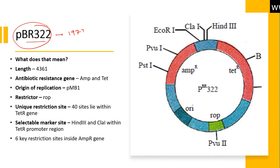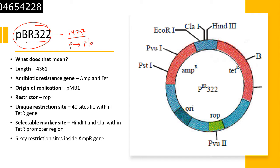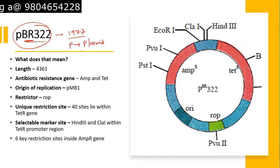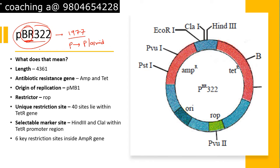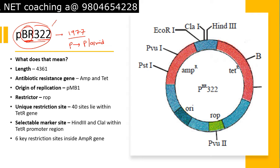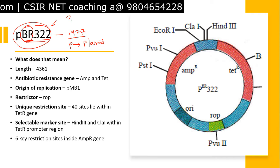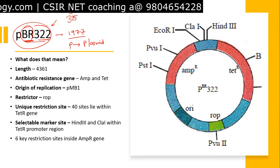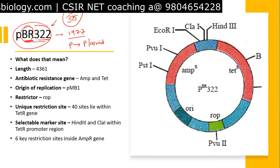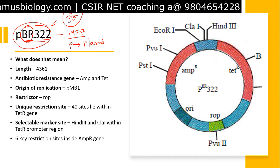PBR322 was created in 1977 in the laboratory of Herbert Boyer at the University of California, San Francisco. In the name: P stands for plasmid, BR stands for Bolivar and Rodriguez — the names of the researchers working with this particular plasmid — and 322 is the number of the plasmid they worked with. That lab was working with multiple plasmids like 325, 327, and others, and this one is number 322.